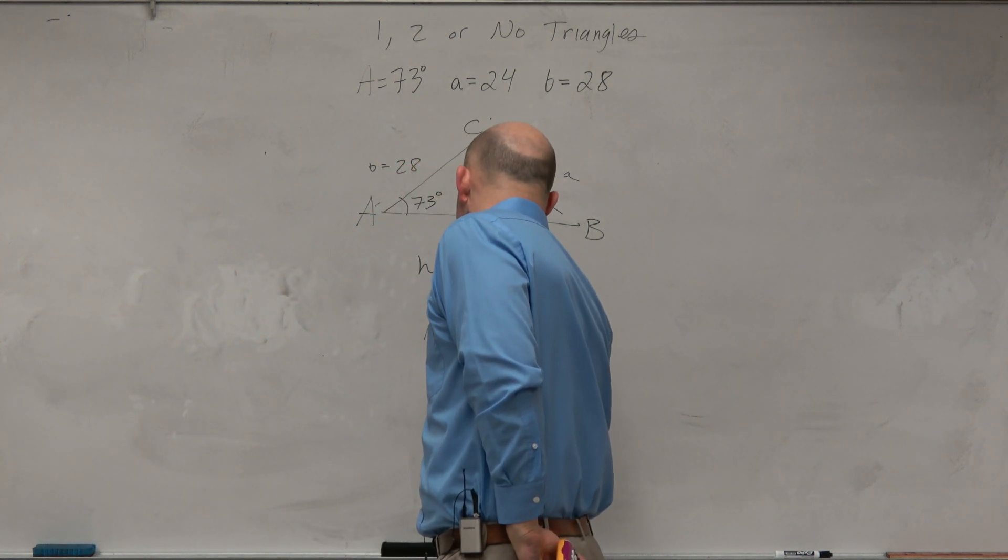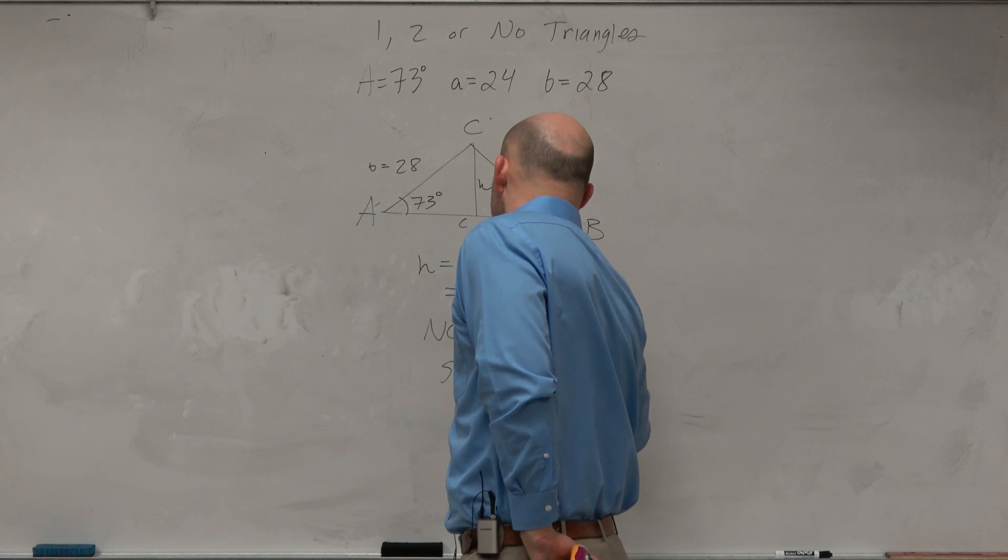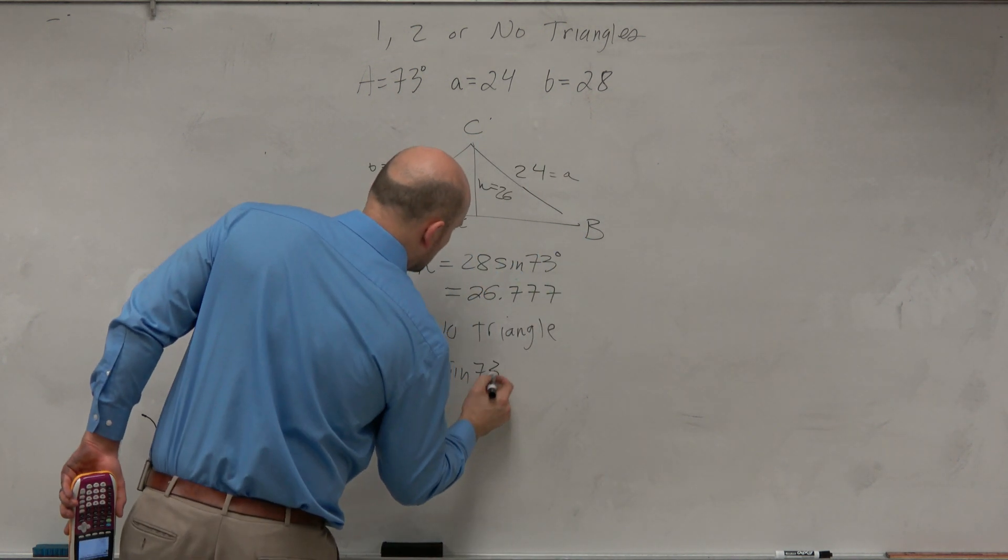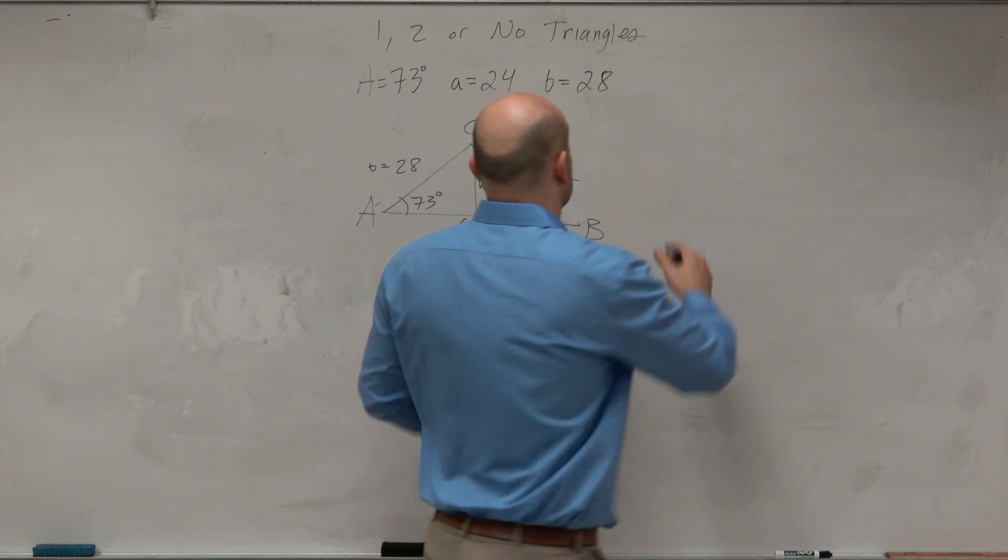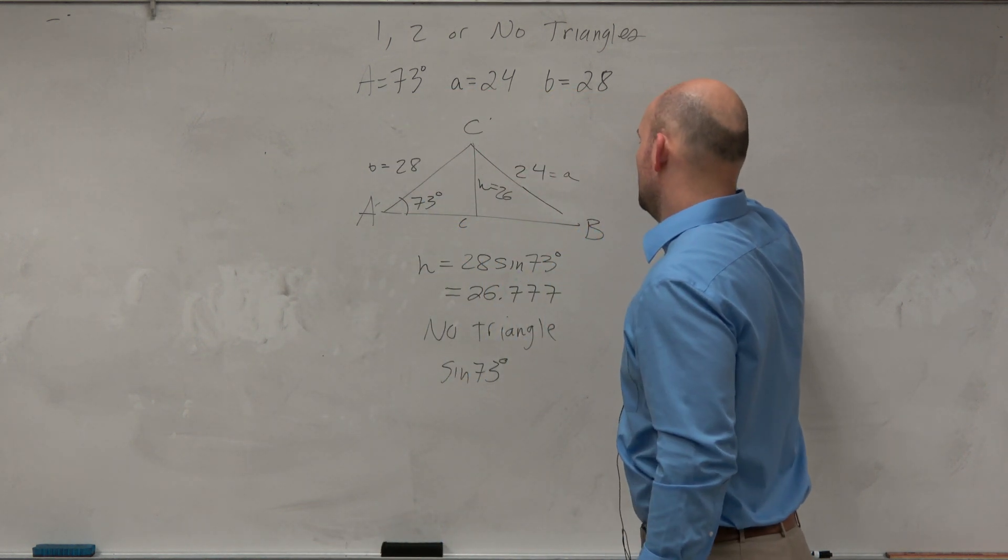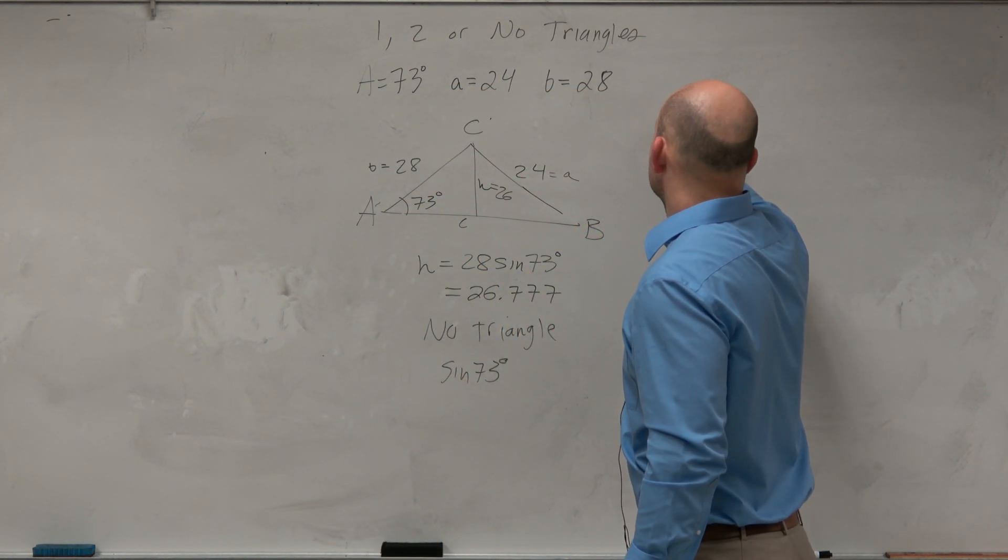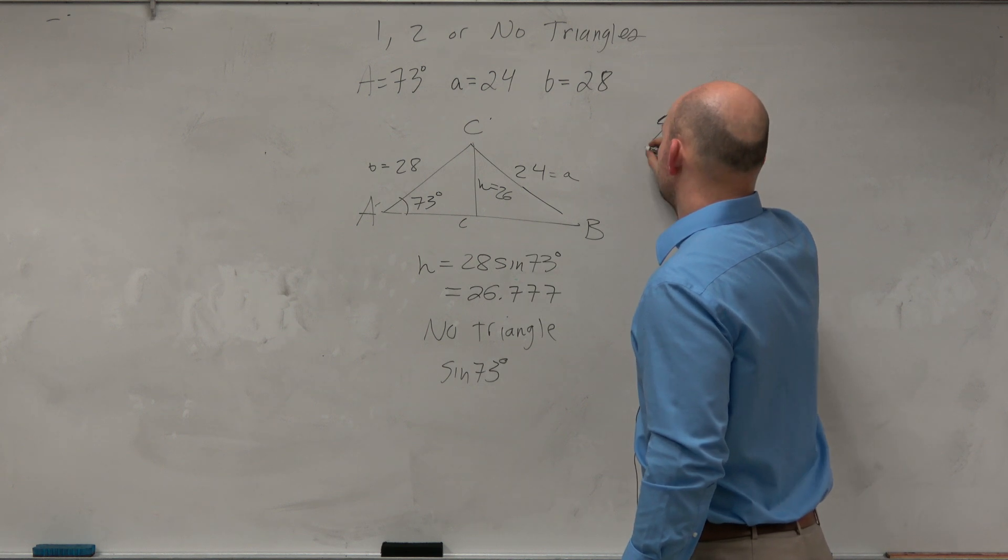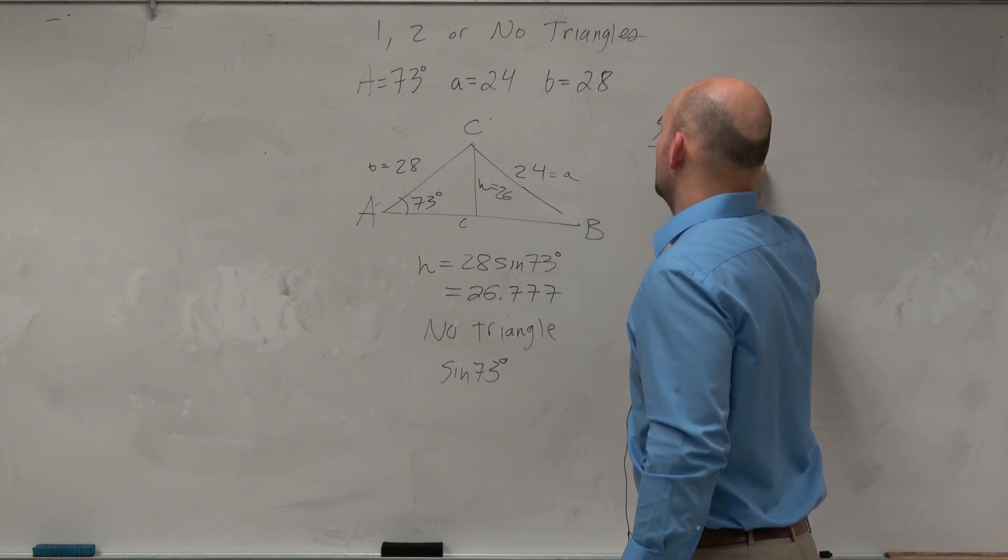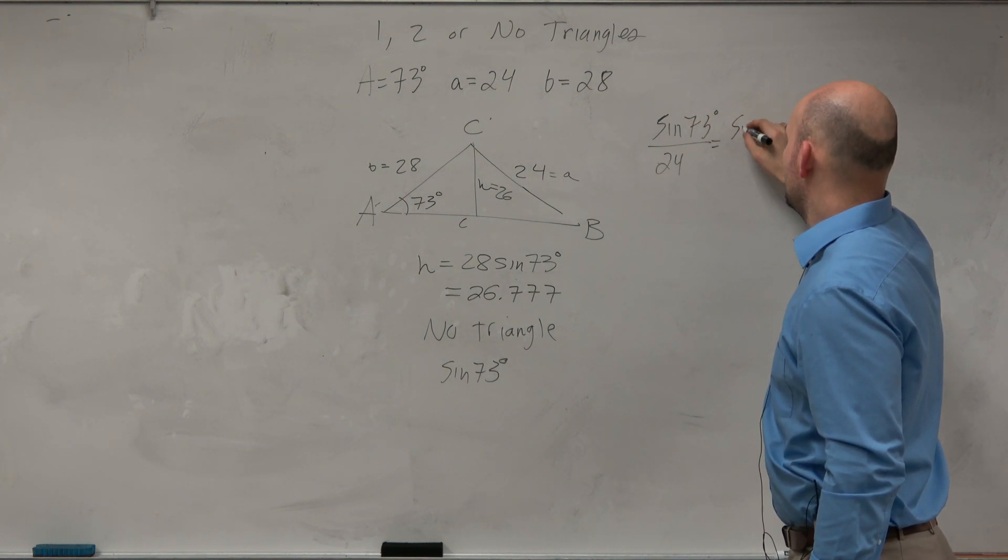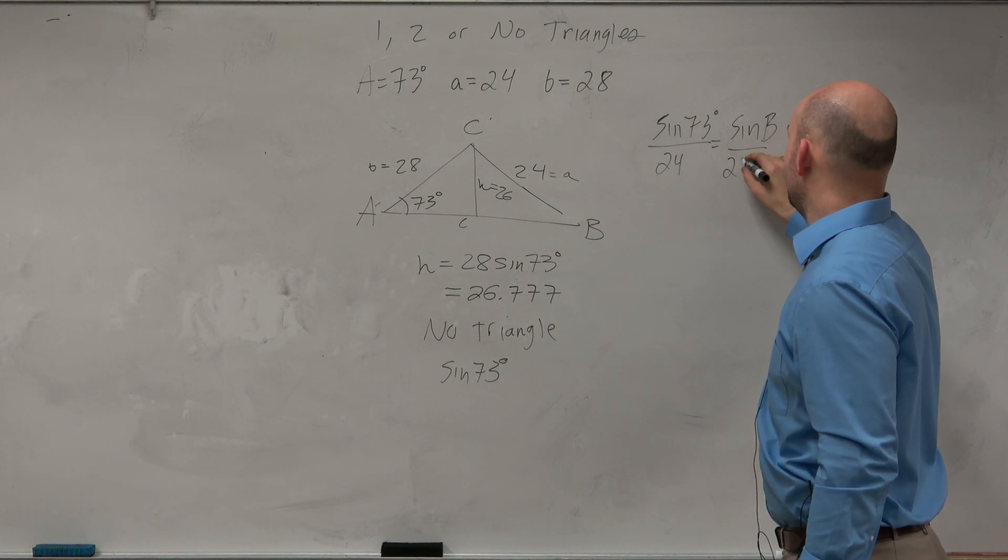So I could do the sine of 73. Actually, do I have enough room over here? I'll do it over here. So I have the sine of 73 degrees all over 24 is equal to the sine of b over 28.